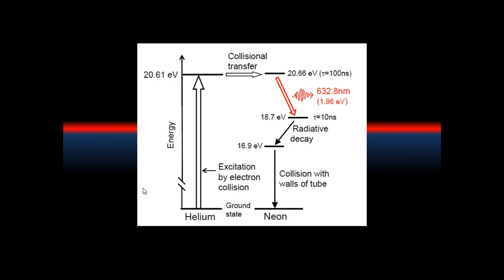Electrons here are pulled off atoms, creating a plasma inside the tube, and are accelerated towards the positive terminal. On their way, the electrons hit into helium atoms, causing them to become excited. Some of these helium atoms then crash into neon ones, transferring the energy across.